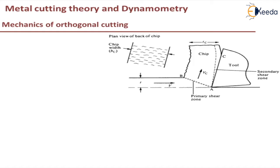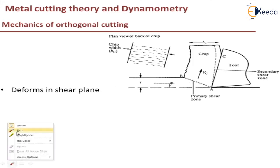Various studies have been done and it is evident that the Mechanics of Orthogonal Cutting will happen in a particular fashion. As you can see in the sketch, there is a primary shear zone and there is a secondary shear zone. Before the shear zone, there is an uncut chip thickness, and after the cut, there is a cut chip thickness. The deformation will not happen before the shear plane or shear zone.